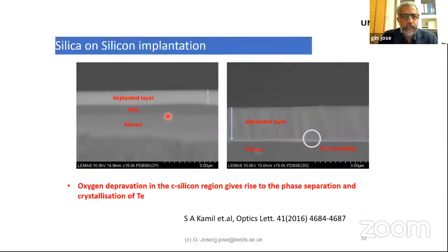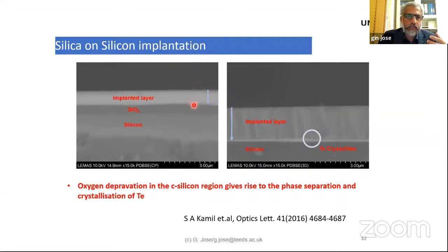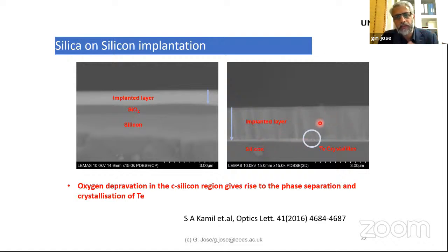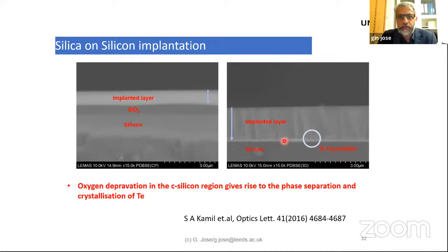This process can also be applied to a silica layer on a silicon substrate. The implanted layer is created on top of silica on silicon. If you run the process for longer time, you can convert all of that silica layer into the doped layer. Running too long causes some elements within the plasma to accumulate at the silica-silicon interface.